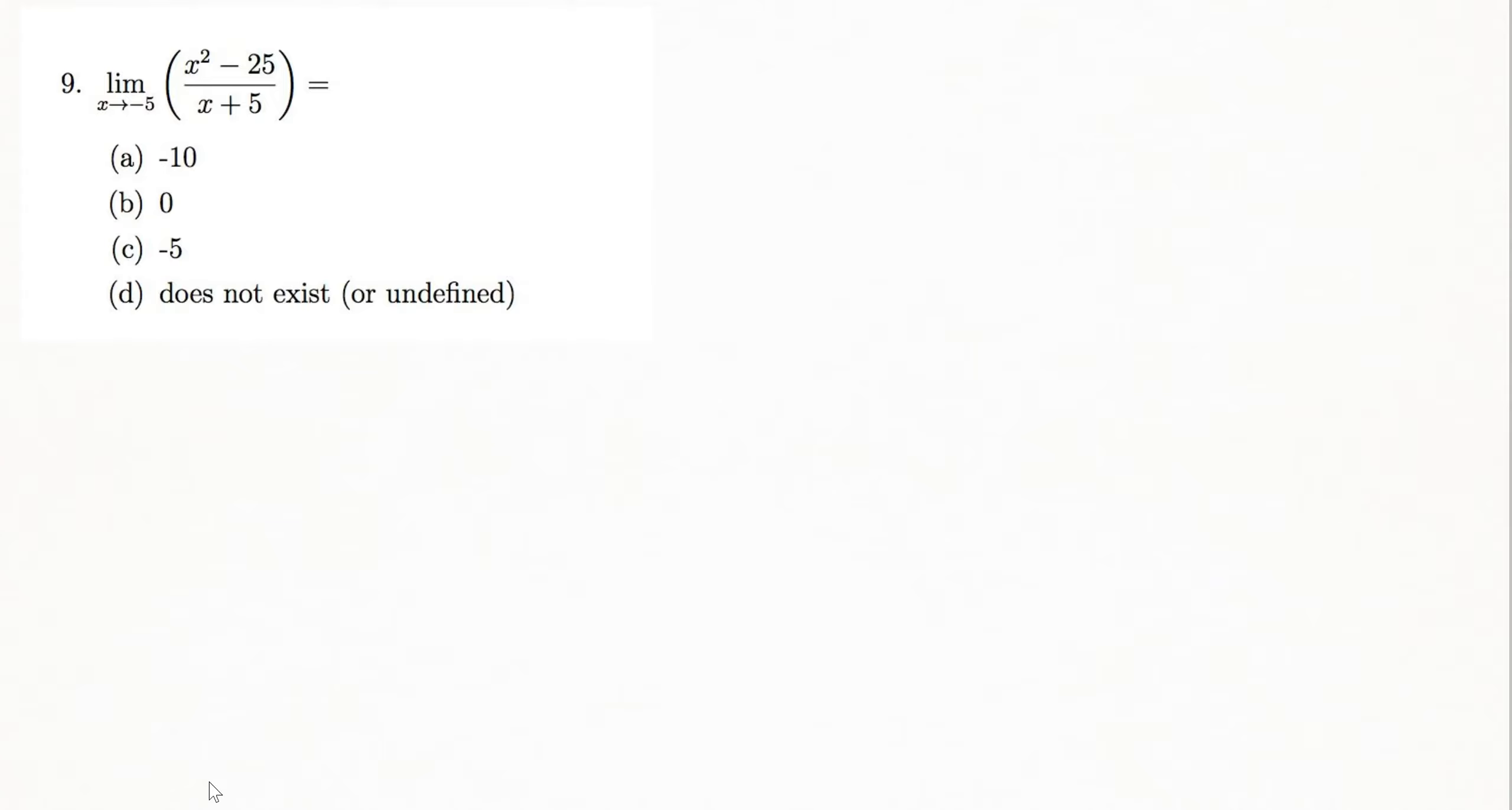Question 9 is another limit problem, but instead of giving us a graph to work from, we're using an equation. They're asking us to find the limit, the overall limit, as x approaches negative 5 of the equation x squared minus 25 over x plus 5.